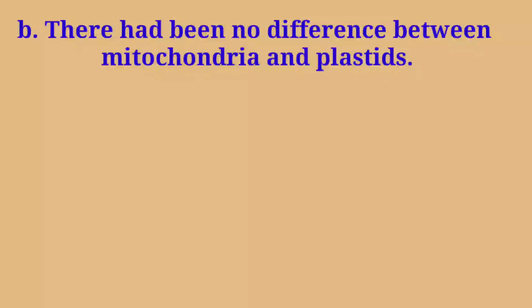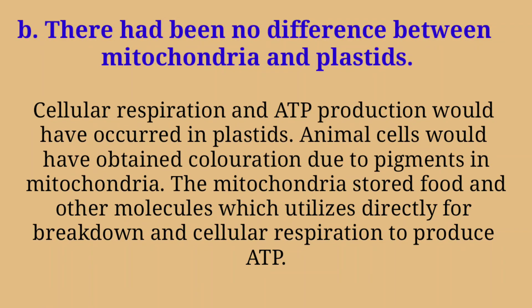B. There had been no difference between mitochondria and plastids. Cellular respiration and ATP production would have occurred in plastids. Animal cells would have obtained coloration due to pigments in mitochondria. The mitochondria stored food and other molecules which are utilized directly for breakdown and cellular respiration to produce ATP.